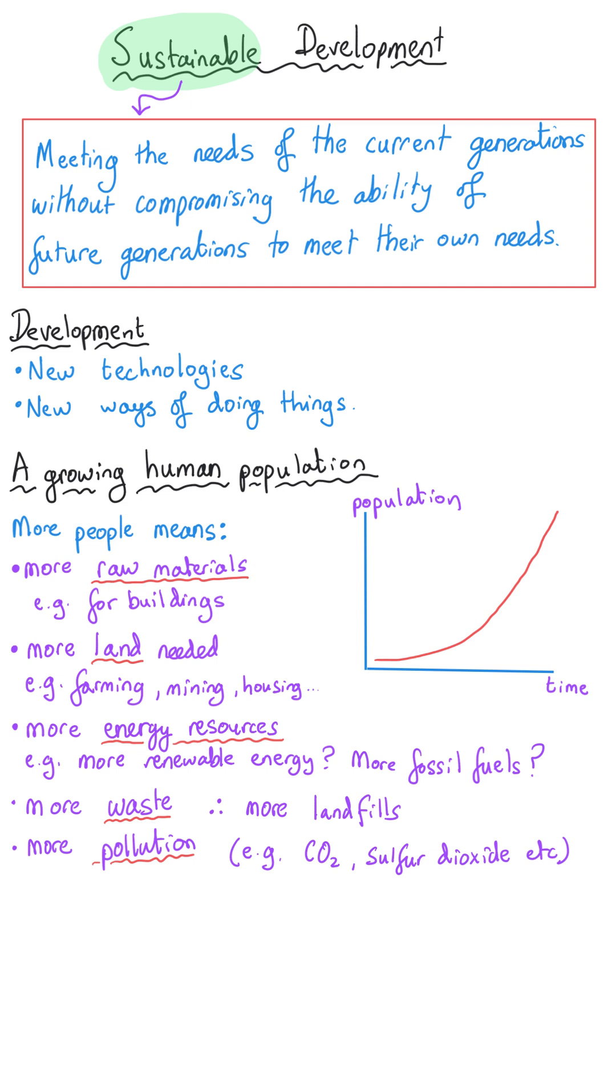And so the challenge for sustainable development is to improve such things as agriculture in order to provide more food for this population and that might be crops that grow quicker or it might be crops that we get a better yield with or it might be more efficient techniques for farming.